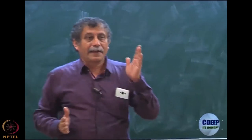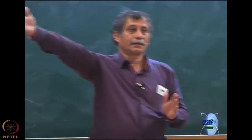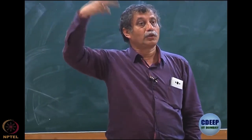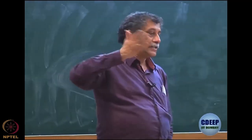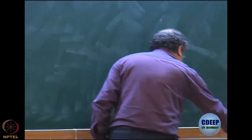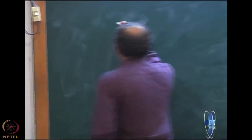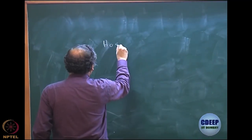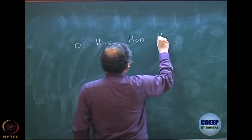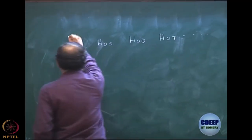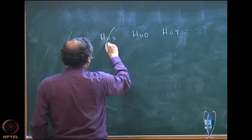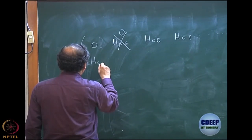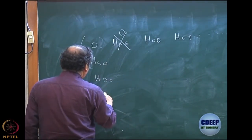Because of Slater's rule, any excited determinant cannot have interaction with another determinant which is of more than two excitations - that will become zero. So you can see the structure: we are talking only of correlation energy, so the first element is always zero, then we have H₀S, H₀D, H₀T and so on in a full CI. This is zero because of Brillouin's theorem - an additional simplification. Similarly in the columns we have singles, doubles, triples with Hartree-Fock.